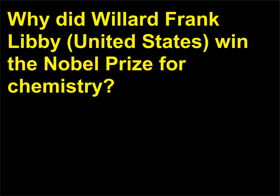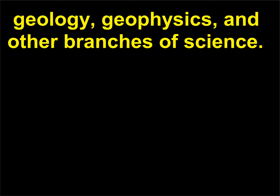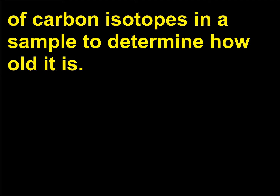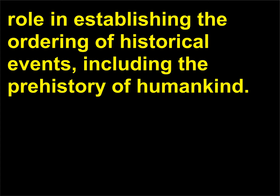Why did Willard Frank Libby, United States, win the Nobel Prize for Chemistry? For his method to use carbon-14 for age determination in archaeology, geology, geophysics, and other branches of science. Libby developed a procedure that uses the relative abundance of carbon isotopes in a sample to determine how old it is. This procedure has been extremely useful to scientists from many fields and has played a major role in establishing the ordering of historical events, including the prehistory of humankind.